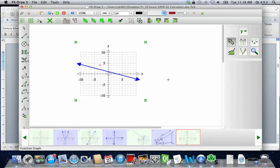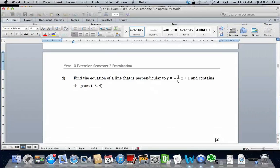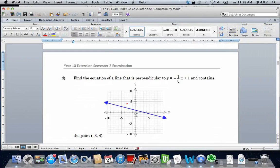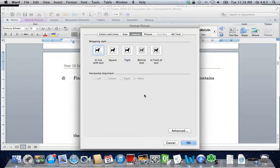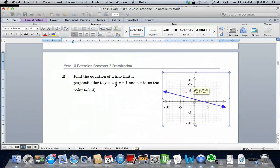Now if I click on the green tick, FXDraw will place that graph back into Word. So let's do some Word things. Change the formatting of the picture so it's got square wrapping and put it where I want it.